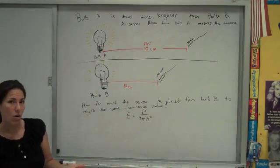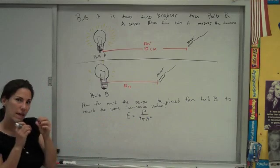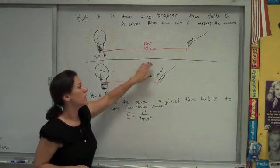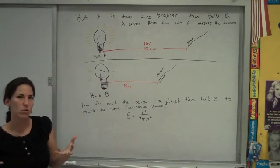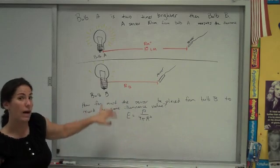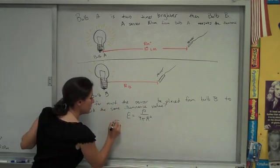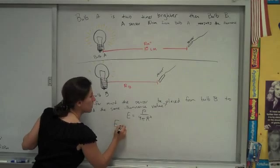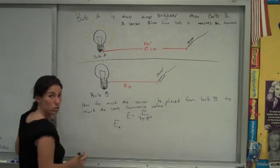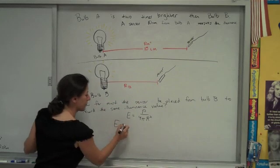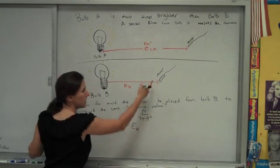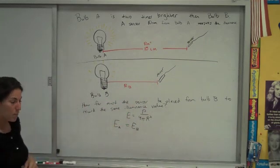Another way to go is to just take the statement that the illuminance values will be equal and make that into its own little equation that's only valid if that's true, which in this case it is. That the illuminance that this sensor is measuring from bulb A is equal to the illuminance that it's going to measure in the second setup with the second bulb.